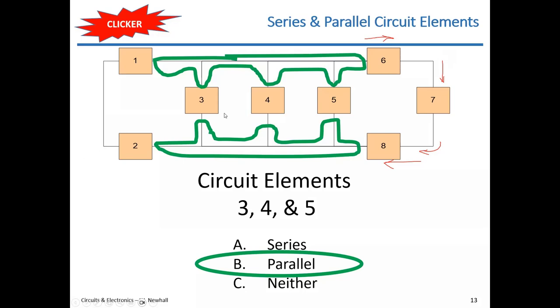Always go back to the two questions: if current flows through element A and that same current flows through element B, they're in series; if A and B connect to the same two nodes, they're in parallel. Even if zero current is actually flowing, the topology still defines the series/parallel relationship. Now let's talk about electrical sources — circuit elements that maintain a voltage or current in a circuit. Sources cause voltage or current to happen. Realistic examples include batteries, solar panels, and battery chargers as DC sources, and signal generators as AC sources.